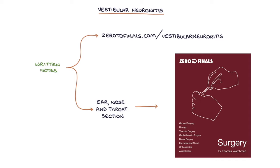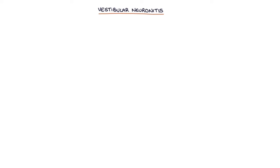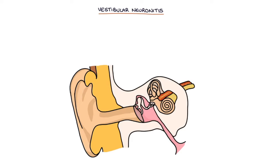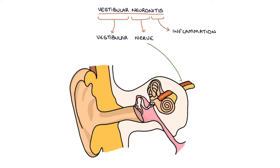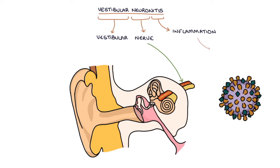Let's jump straight in. Vestibular neuronitis describes inflammation of the vestibular nerve. This is usually attributed to a viral infection.